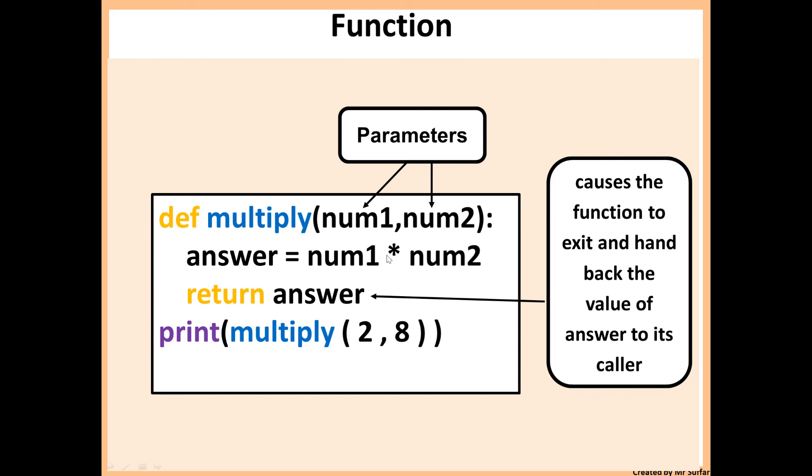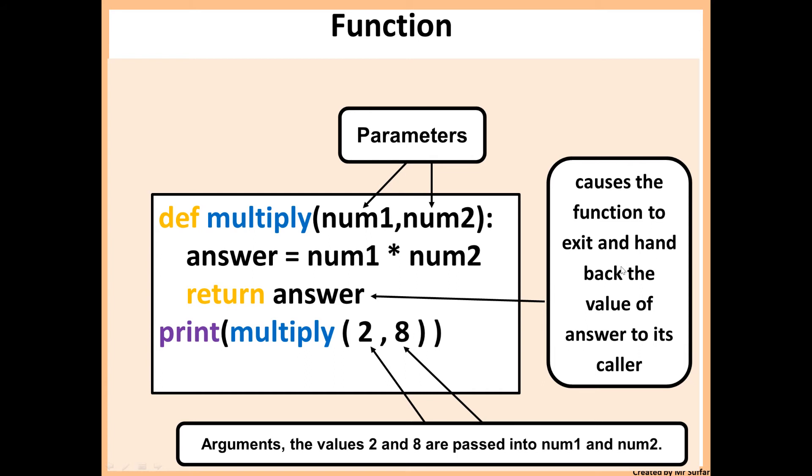Whatever is stored inside the answer will be handed down to multiply. The final line will call the function, it will run the function, and then at the end it will also display the value of answer of whichever has been returned. In this case, it will display two times eight, which is 16.